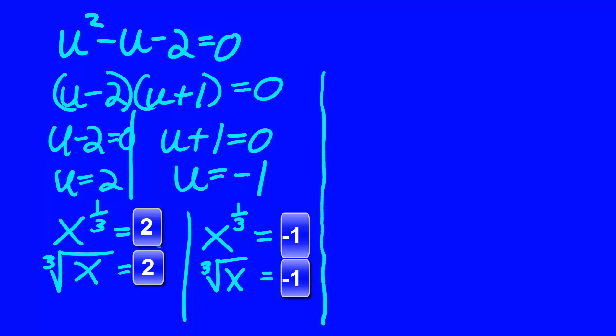Now all we have to do is solve these short little radical equations. To get x by itself, we need to cube both sides of the equation. That will release x from the radical and we find x = 8.